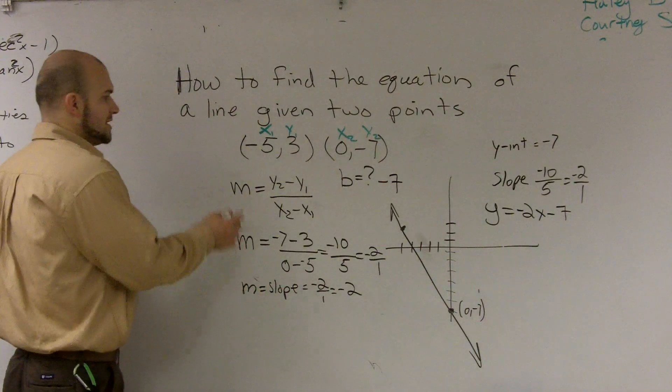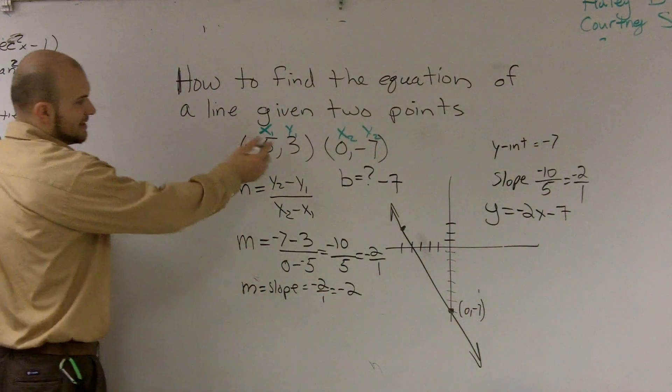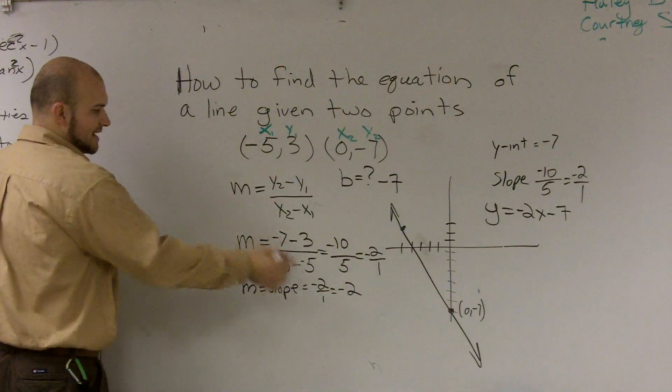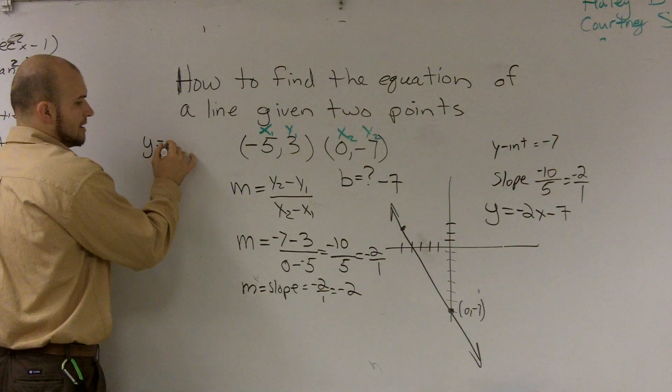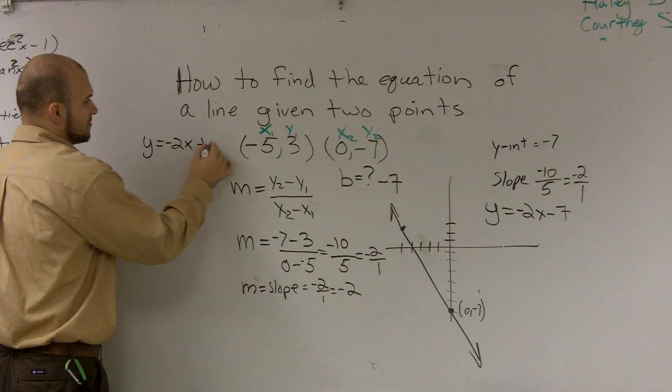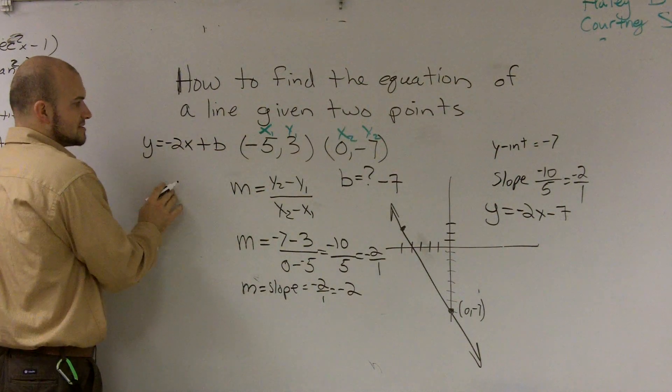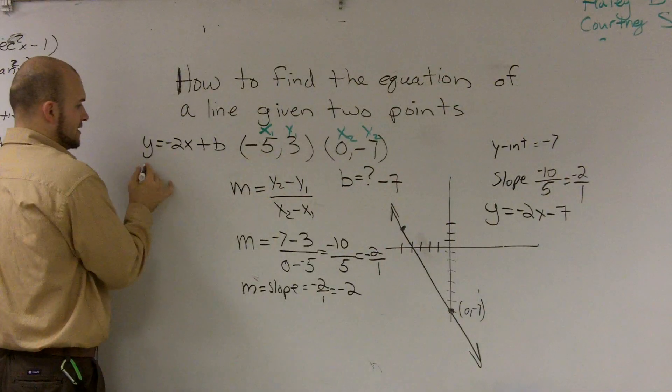However, another way you can figure it out is, if you guys remember, if I already know what a point is and I know what the slope is, I can say y equals negative 2x plus b. I don't know what b is, and I don't know what x and y are, but I can use one of these points.